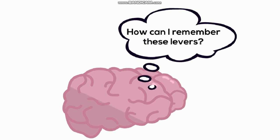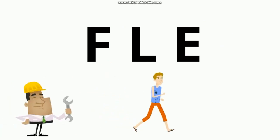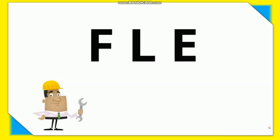Now, how to remember the three types of levers? There is a three-word mnemonic: F, L, and E. F is for the first class lever — the fulcrum is at the center. L is for the second class lever — the load is at the center. E is for the third class lever — the effort is at the center.